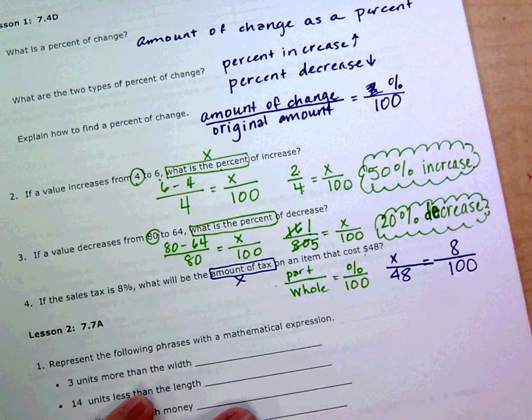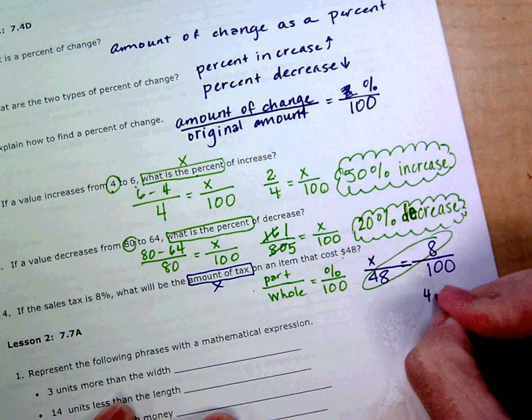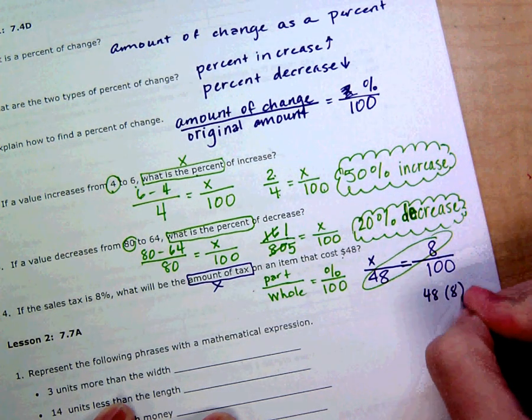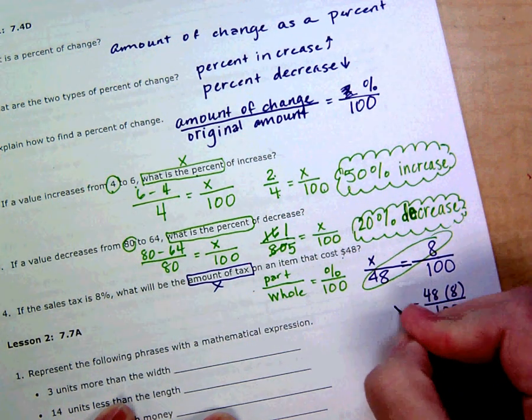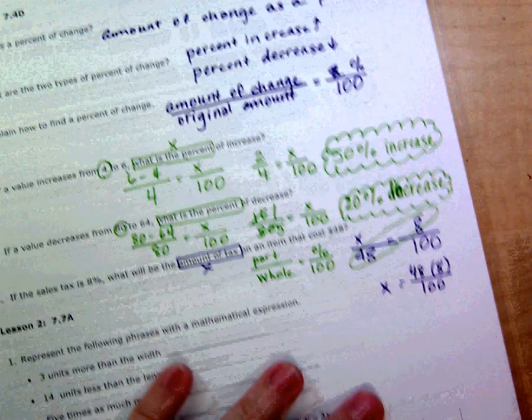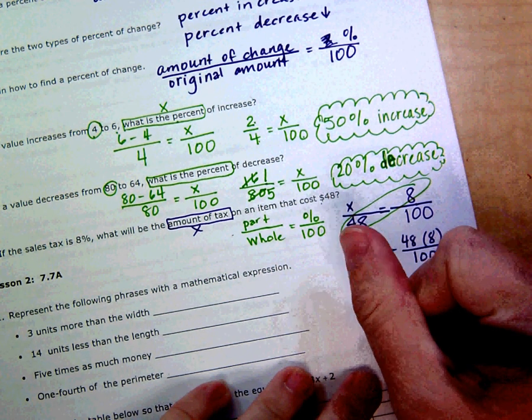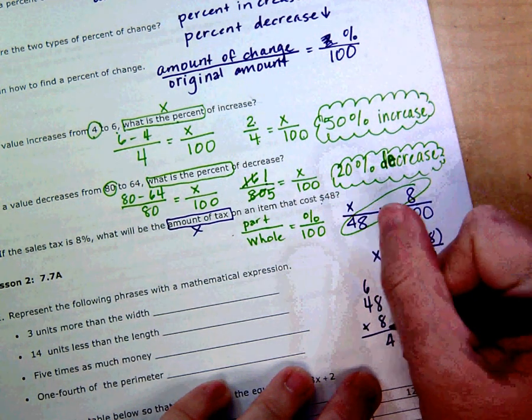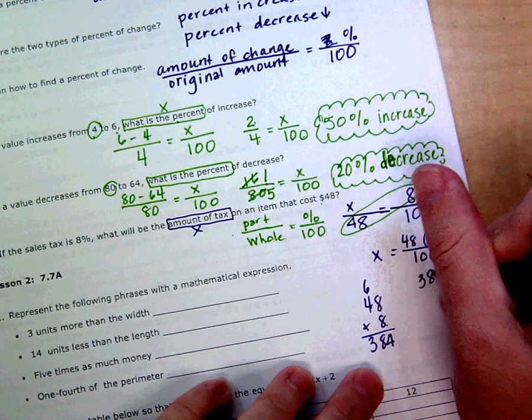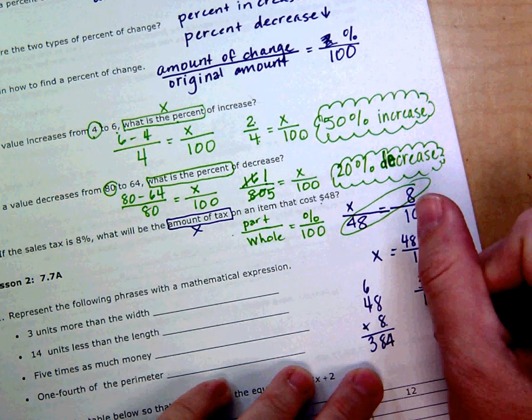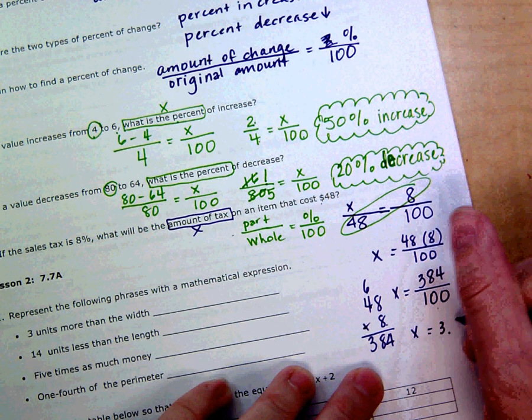We'll make an equal sign there. The percent is 8% and then we have 100. Cross multiply and divide: 48 times 8. When you multiply that, 48 times 8, 64, 32 plus 6 gives me 38, so 384 over 100. 384 divided by 100 gives me 3.84.